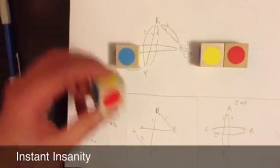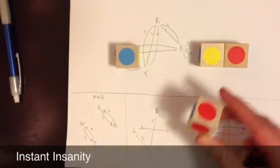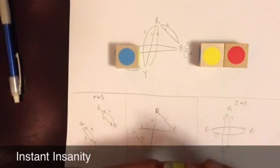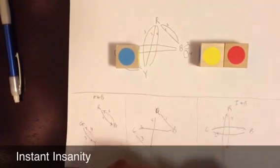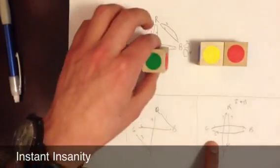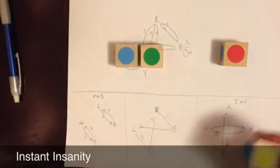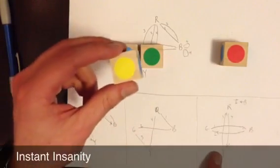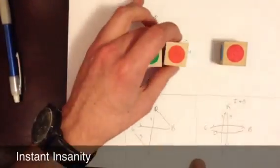So, we continue with all these cubes. Cube two, the front should be red, and the back should be blue. Front red, back blue. Over here, the top should be green, and the bottom blue, so we have that. For cube three, front is yellow, and the back is green, and the top is red, the bottom is yellow.